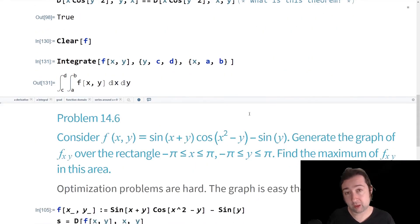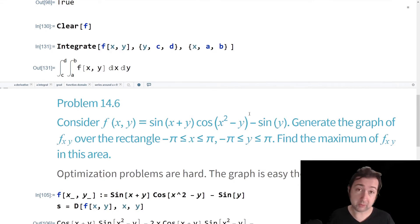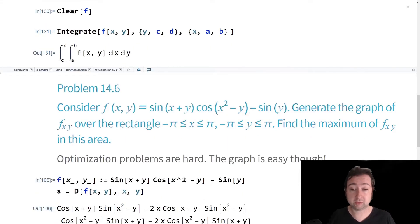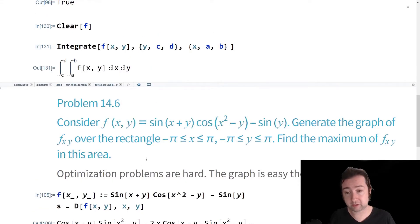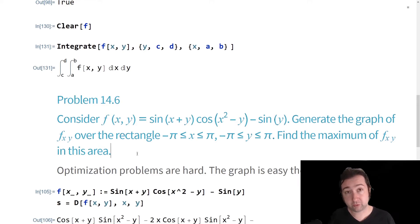Let's look at a problem that involves some calculus and actually some optimization as well. The problem we're going to look at briefly here is, we're going to look at a function of two variables, which is a surface that is defined this way. We're going to generate the graph of this second derivative over the rectangle from minus pi to pi minus pi to pi. And then we're going to try to maximize that partial derivative, second partial derivative within that rectangle.